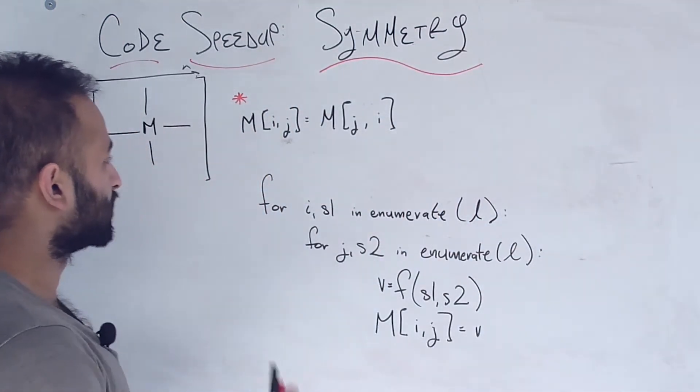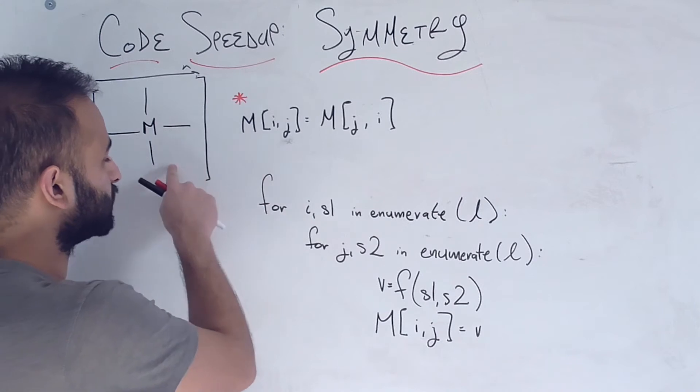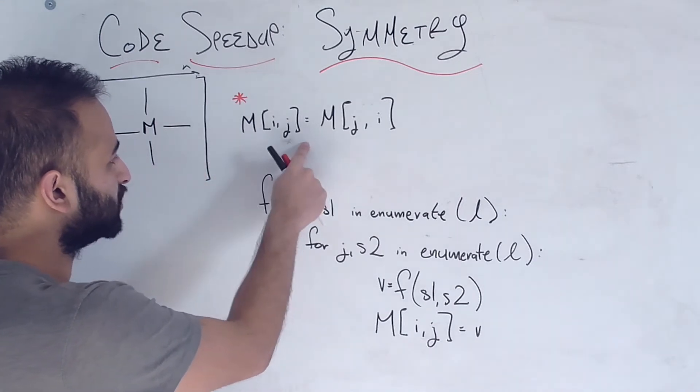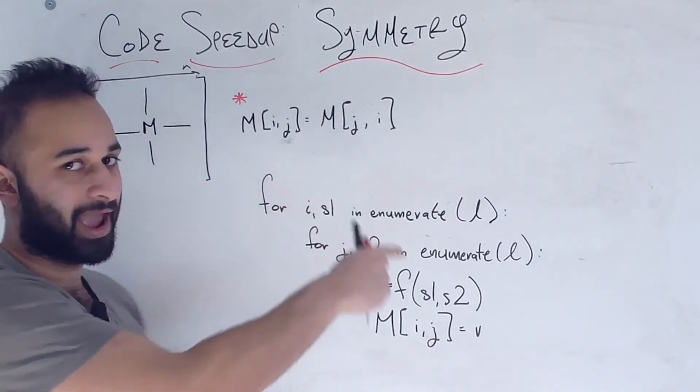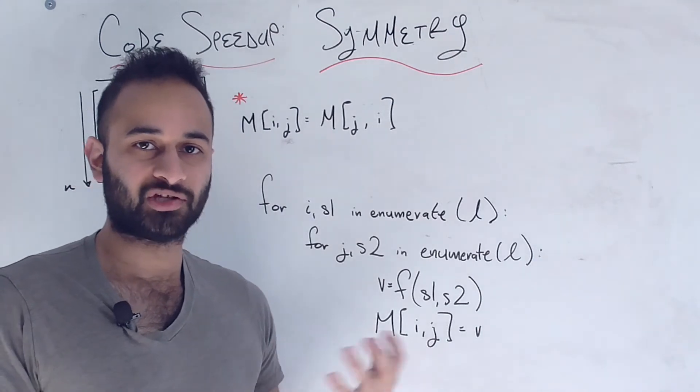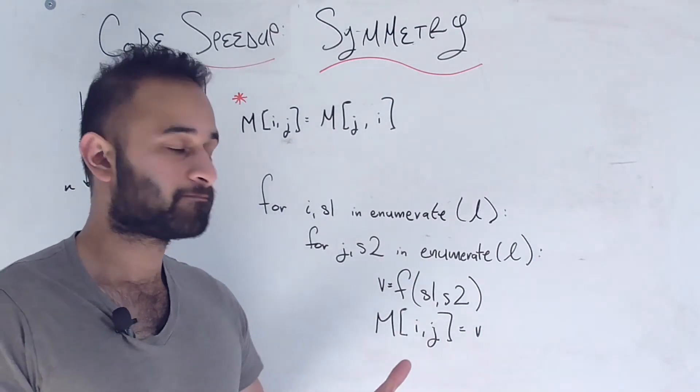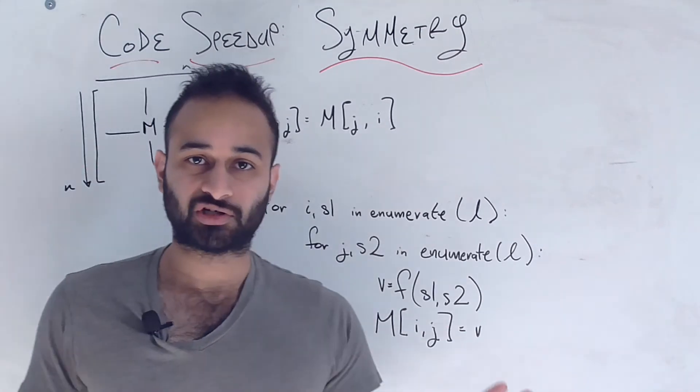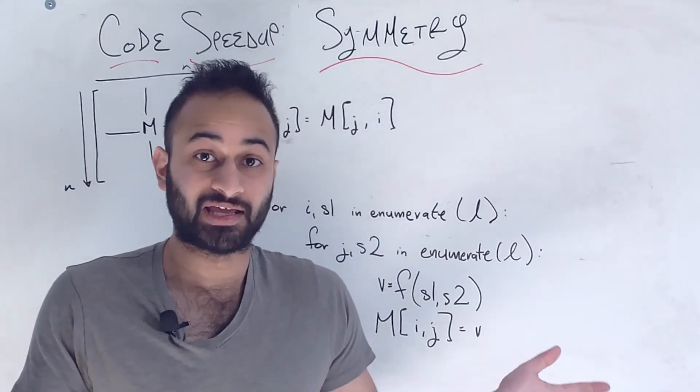So that's enough about the setup of the problem. Let's look at the code. So as we said here, the main feature of this matrix m is that m at ij is going to be equal to m at ji. Okay, for every i and j that are from 1 to n. Now let's look at some naive code where we haven't done the symmetry speedup. We just wrote it naively.